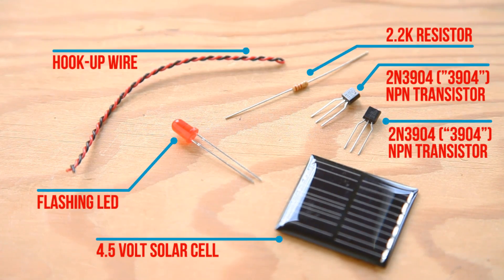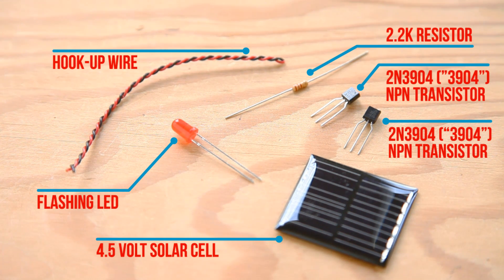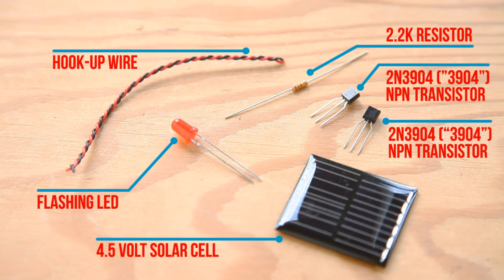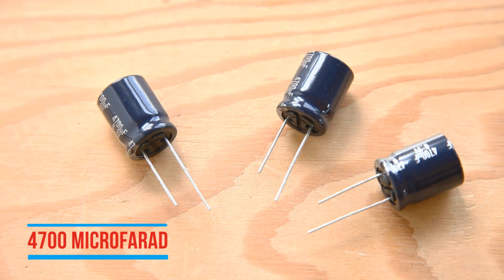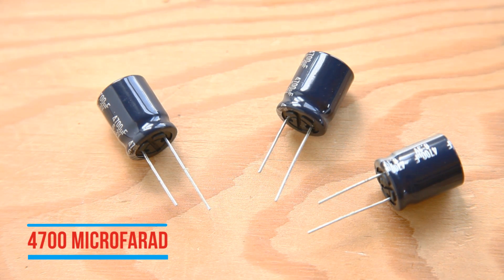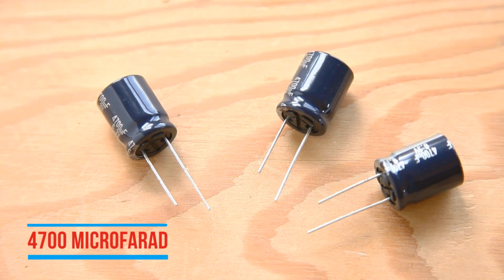You will need the following parts for the build. Three large 4,700 microfarad capacitors collect and store the electricity needed to make the vehicles move. They basically function like a battery in this circuit.